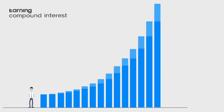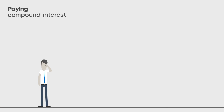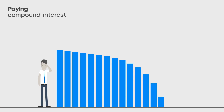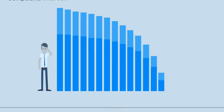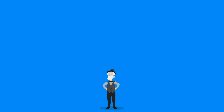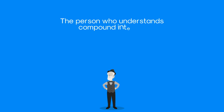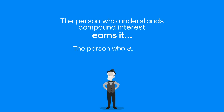Mortgages and credit cards are compound interest in reverse, meaning the bank gives you some money now, which you must repay over time, then you must pay interest over many years. That's why Albert Einstein also said: the person who understands compound interest earns it, the person who doesn't pays it.